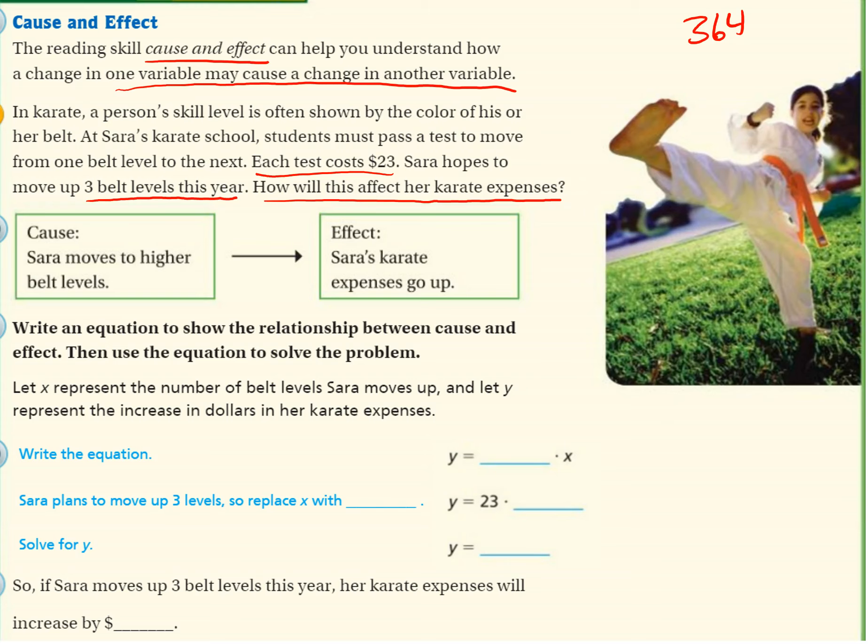So with cause and effect, think of the cause. Sarah moves to higher belt levels. Because Sarah moves to higher belt levels, Sarah's karate expenses go up. I like to think of it as because and effect. Because Sarah moves to higher belt levels, it's going to cost her more money because each time she wants to move to a higher belt level, it costs $23.